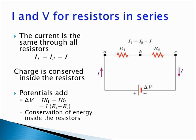For resistors in series, you can write two simple equations to find currents and potential differences. For the currents, I1 — the current through R1 — is equal to I2, the current through R2, and equals the current I that enters R1 and exits R2. This simply reflects conservation of charge inside the resistors. The total potential difference ΔV across R1 and R2 equals the potential difference across R1 plus the potential difference across R2. By Ohm's law, ΔV = I·R1 + I·R2.